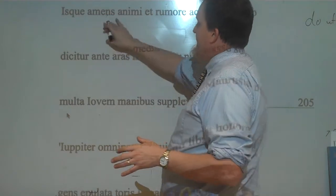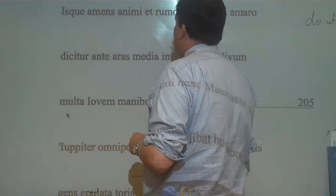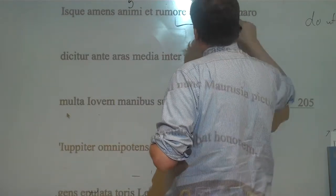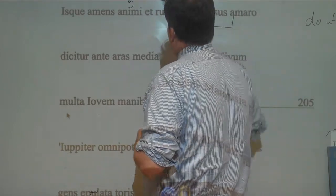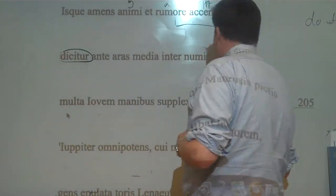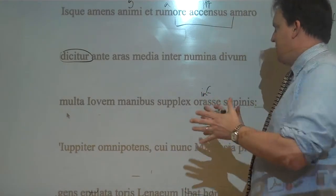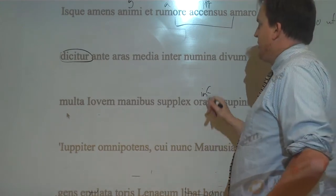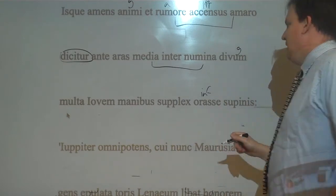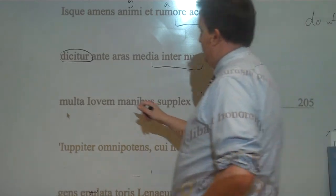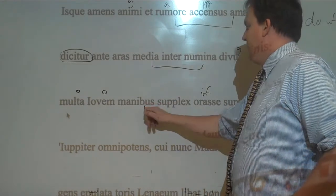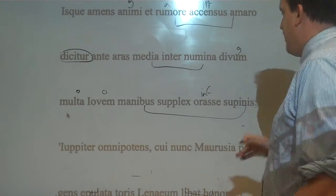So this man, crazy of the mind, and inflamed, PPP, inflamed by the bitter rumor, rumore amaro, he is said, dikitur, what's he said to do? He is said to orase, this is a perfect infinitive that's been contracted, to have prayed before the altars among the middle divine powers of the gods, amongst the statues. And he's said to have begged many things, multa, of Jupiter, with his upraised hands. And he did this suplex humbly. So he's there praying to Jupiter, doing all these things.